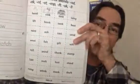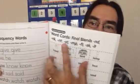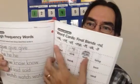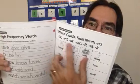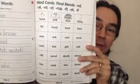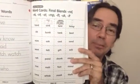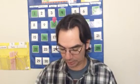Next up, page 3.18. This is sorting all of our final blends: ND, NT, NK, ST, MP, FT, SK, LT — there's a bunch of them. Sort the words by their ending blend. If you find two that end with SK, put those together. If you want to glue them on a paper you can, or just put them in groups and take a picture of that.